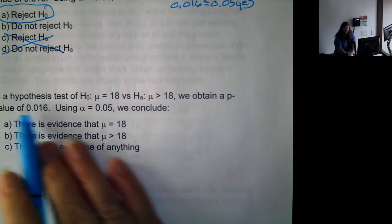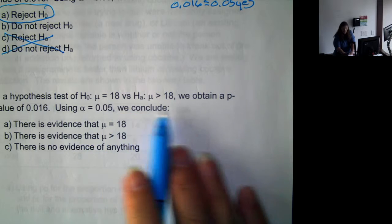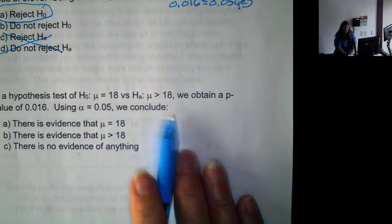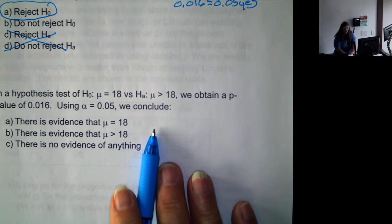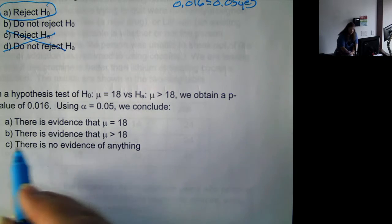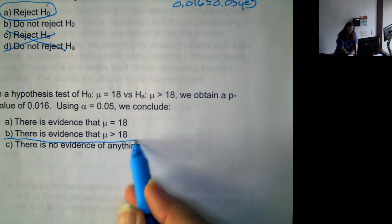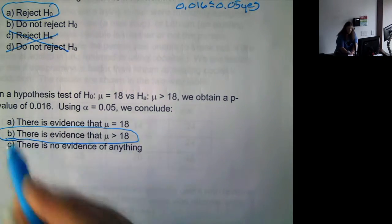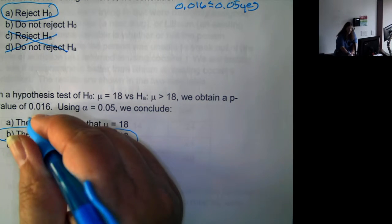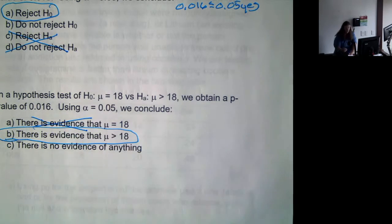So in this one, same options, same p-value. What are we going to conclude? We are going to conclude that there is evidence that μ is greater than 18. A is never an option. We never accept the null hypothesis.